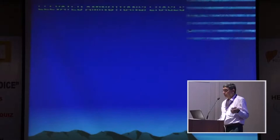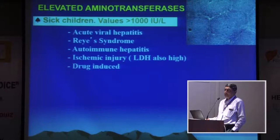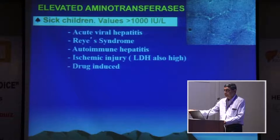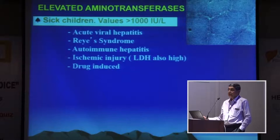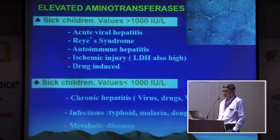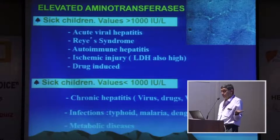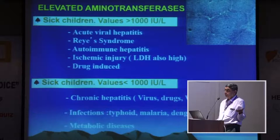If you have a sick child with an ALT above 1000, causes to consider are: acute viral hepatitis, Reye's syndrome, autoimmune hepatitis, ischemic injury, and drug toxicity. For a sick child with values below 1000, think of chronic hepatitis, Wilson's disease, drugs, typhoid, malaria, dengue, leptospira, infectious pneumonia — that is, non-hepatocyte diseases — and metabolic diseases as well.